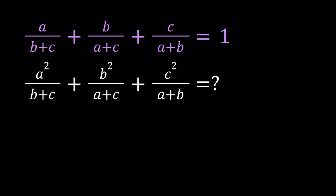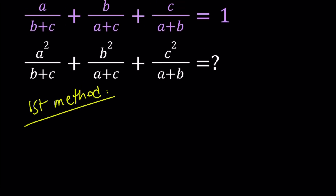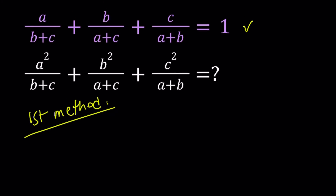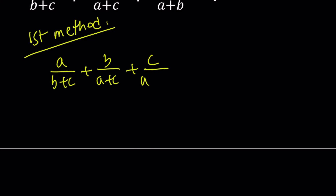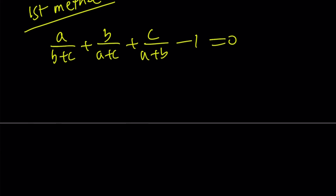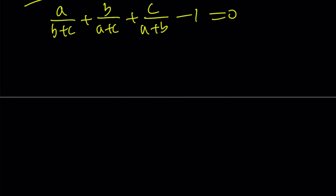I'll be presenting two methods, so let's start with the first one. For my first method, I'm going to subtract 1 from both sides in the given expression so that we can set it equal to 0. So we can write it as a/(b+c) + b/(a+c) + c/(a+b) − 1 = 0. From here we need to make a common denominator. Things are going to be a little messy, but I'll try to keep it organized. So a must be multiplied by (a+c)(a+b) to make a common denominator, and then b must be multiplied by (b+c)(a+b).